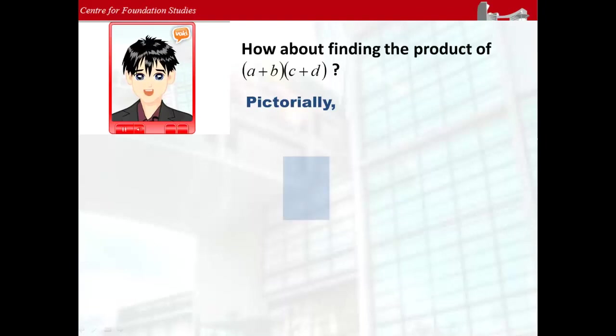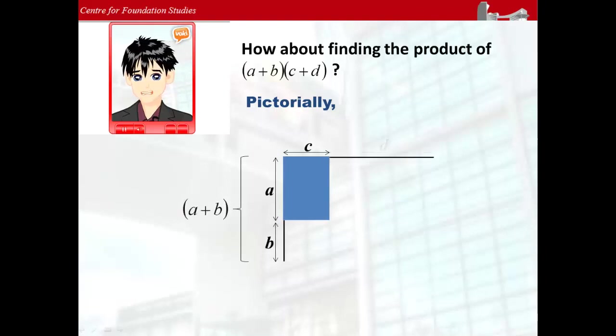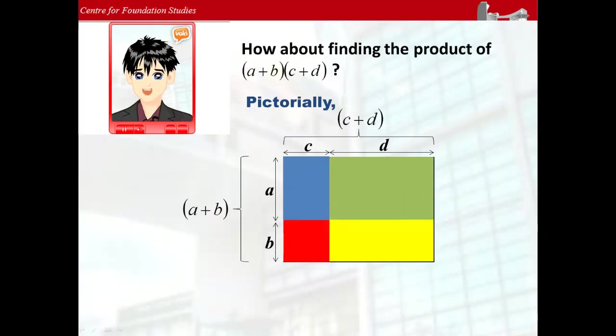We start with a rectangle of dimension a by c units. Extending the length by b units gives a plus b. Extending the width by d units gives c plus d. Now, we see that the new rectangle is composed of four smaller rectangles.